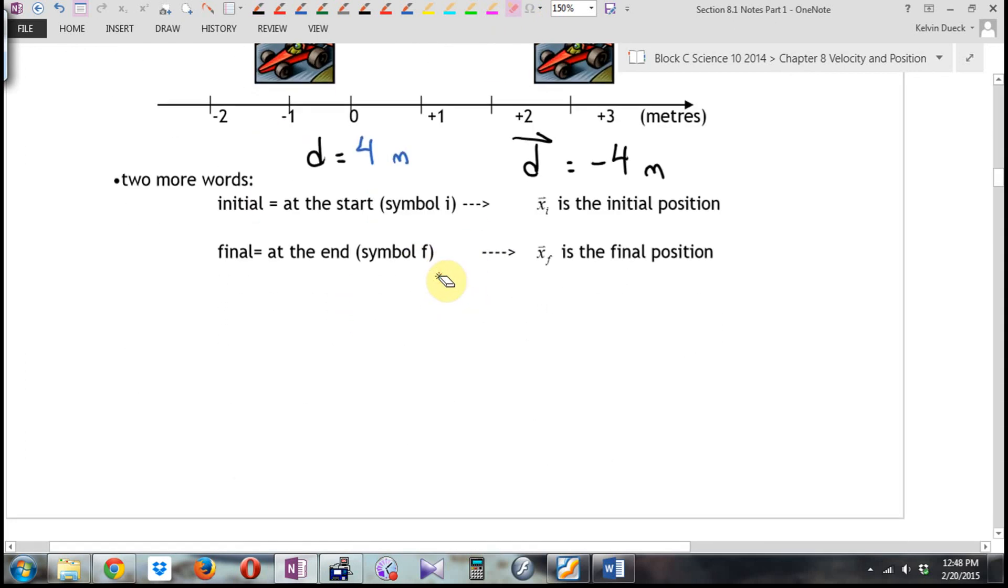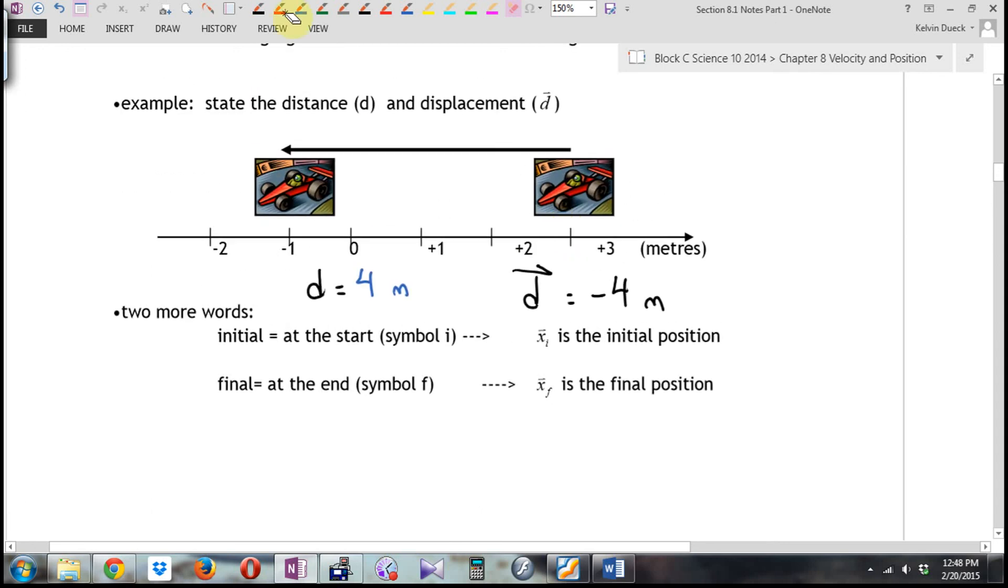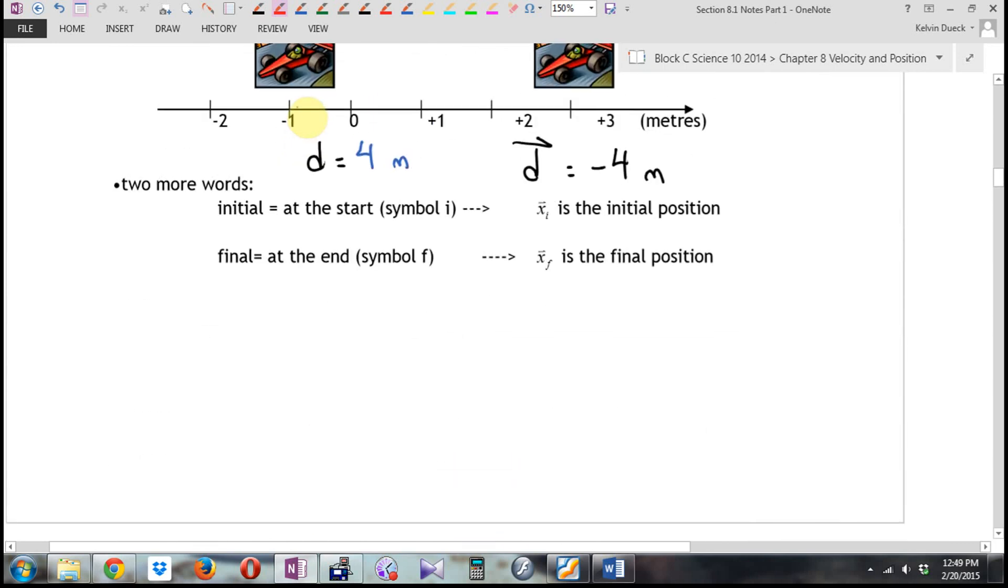Two more words. Initial is the fancy word for starting, and we're going to use a subscripted little i. So if you see xi, that's my way of saying initial position. In fact, you know what? This is xi. F final is going to be our abbreviation for final position. Again, write it as a little subscript. This would be x final. Do I get into final minus initial? Let me just double check. Nope.